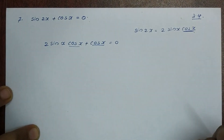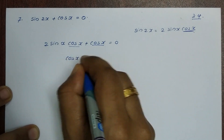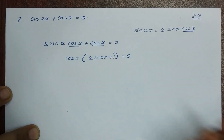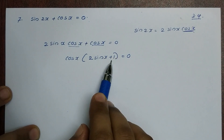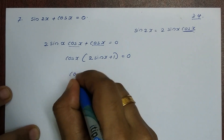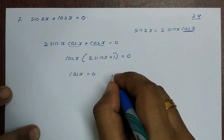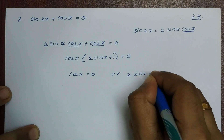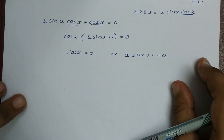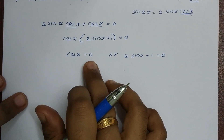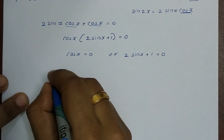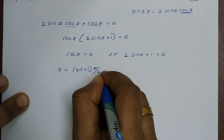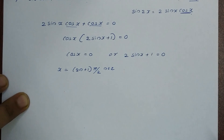We factor out cosx, giving us cosx times (2sinx + 1) equals 0. So either cosx equals 0 or 2sinx plus 1 equals 0. Solving cosx equals 0: x is equal to (2n+1)π/2, where n belongs to Z.